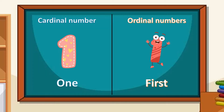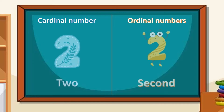Now let's differentiate. In cardinal number we say 'one'; in ordinal we say 'first.' One — first. Two — second.